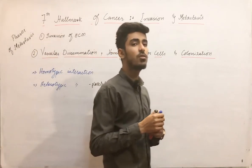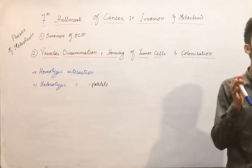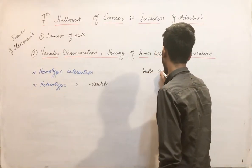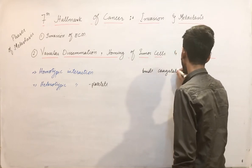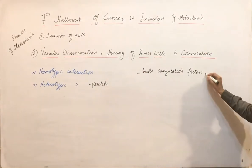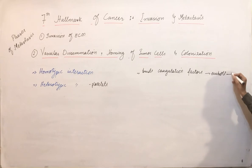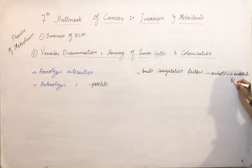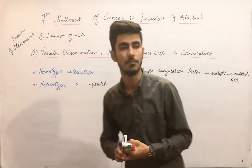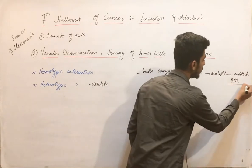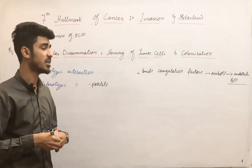The tumor cells also activate and bind to the coagulation cascade — coagulation factors. After binding to the coagulation factors, they form emboli, and this emboli then invades the basement membrane of the endothelium. In this way, the tumor cells invade the endothelium's basement membrane.